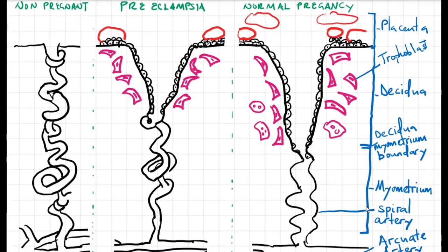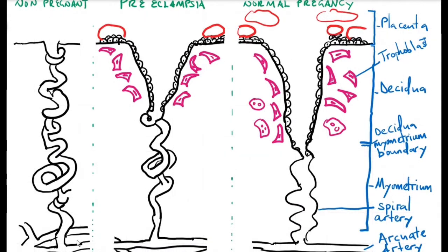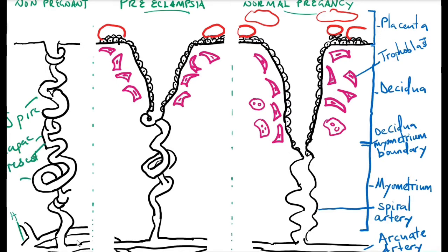Now, if you look at this diagram, these are the trophoblastic changes that occur in pregnancy. In the non-pregnancy state, these are the spiral arteries and these are the arcuate vessels, which branch off from the uterine artery. In the non-pregnancy state, the vessels have low capacitance, high resistance, and they are narrow bore.